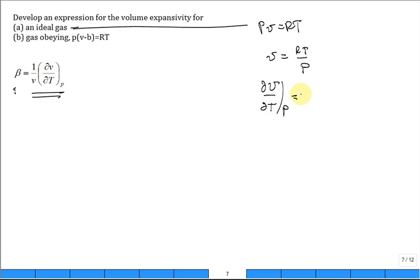When we do that, we get R over P. So let's substitute in. So this first term is 1 over V, which is RT over P.